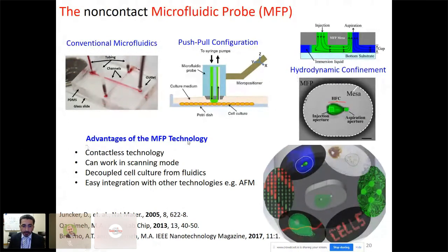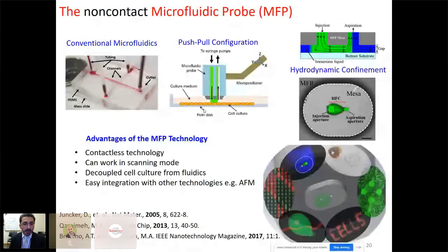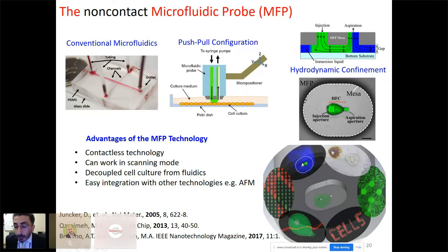The advantages of the MFP technology include: contactless operation, scanning mode via XYZ micropositioner, and easy integration with other technologies like AFM — since the cells remain fully accessible in the open Petri dish after processing. During the years, the MFP has been applied for single-cell analysis, writing on cells, patterning proteins, processing tissue slices including brain and breast cancer tissue, and multipolar configurations.